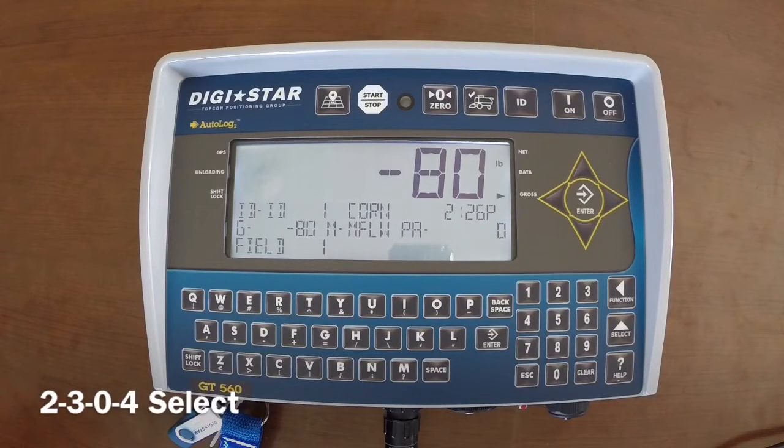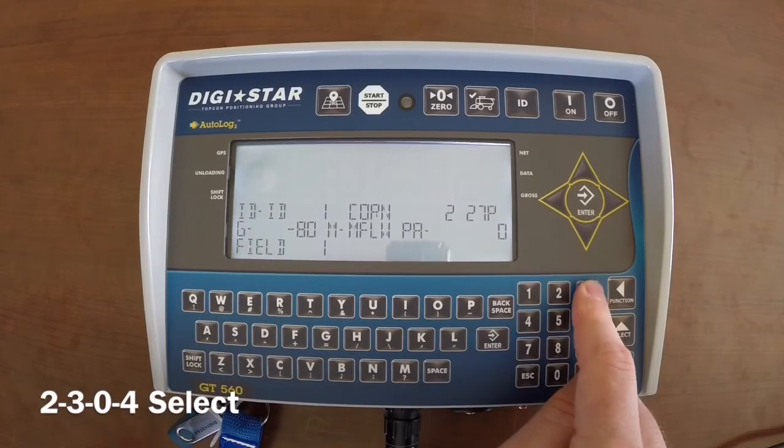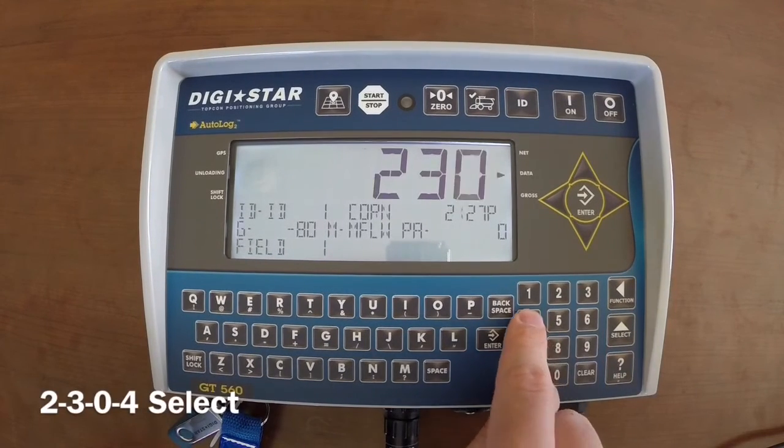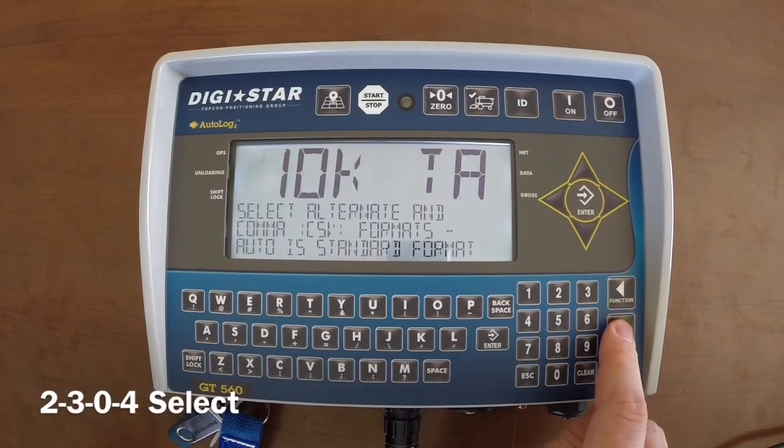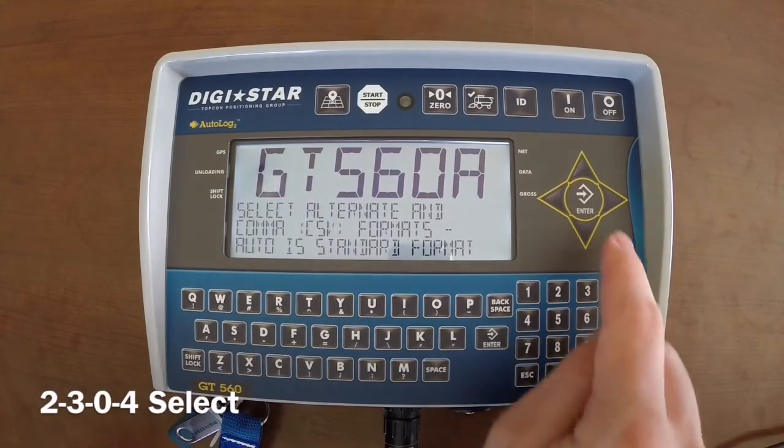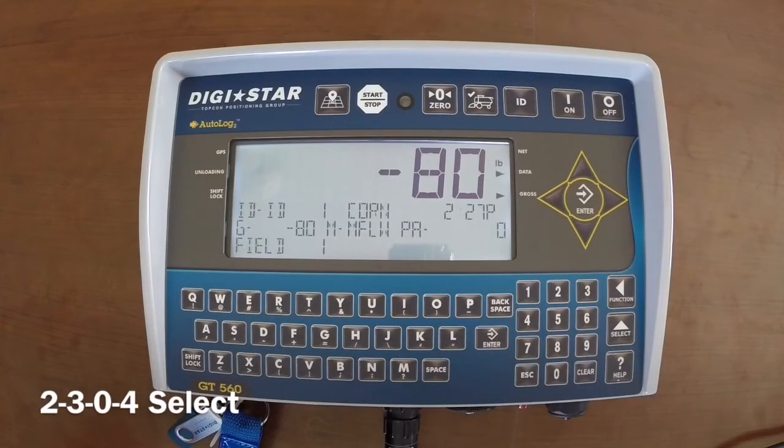Type in 2304 and then the select button. Keep tapping the select button until the screen says GT560A, then press the enter button.